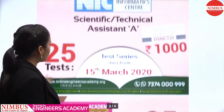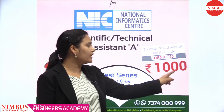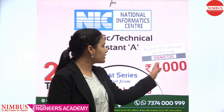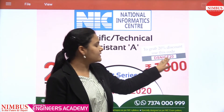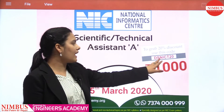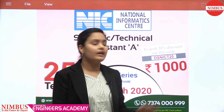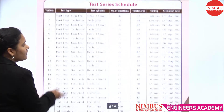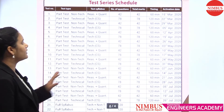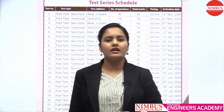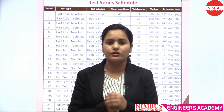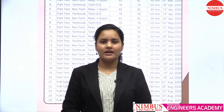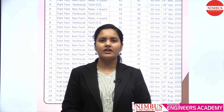The second test series is for Technical Assistant A. The price for this test series is also 1000 rupees. A discount of 20 percent is available by using the discount coupon code DSNICT20 — repeating, DSNICT20. This is the schedule for the test series of Technical Assistant A. You can view the schedule in detail; the link is given below in the description box. If you have any query, you can contact us at 8094441999 or 7374000999.